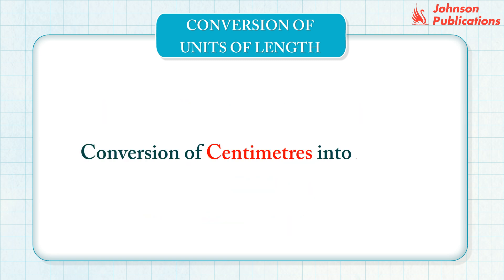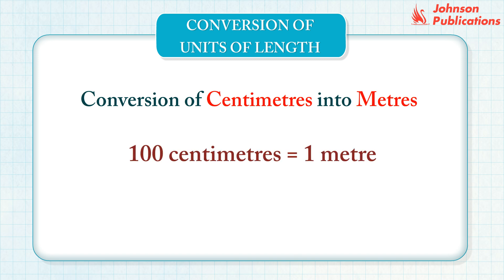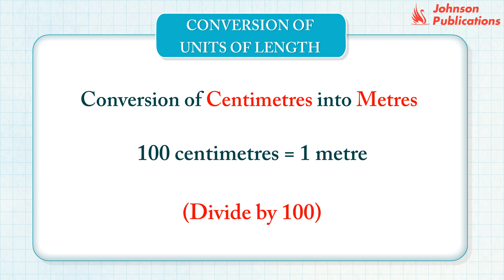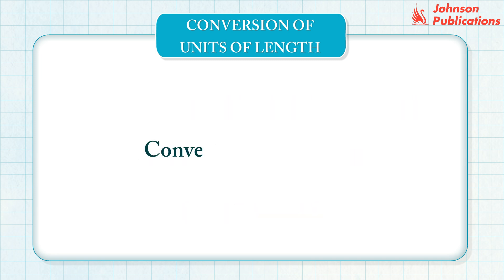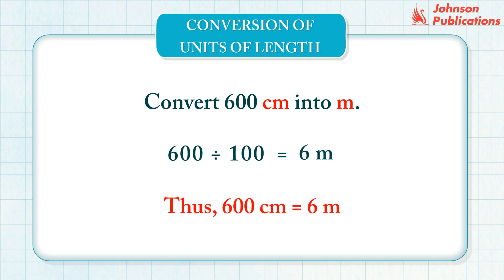Conversion of centimeters into meters. We know that 100 centimeters equals 1 meter. To convert centimeters into meters, divide the centimeters by 100. Let us convert 600 centimeters into meters. Divide 600 centimeters by 100. Thus, 600 centimeters equals 6 meters.